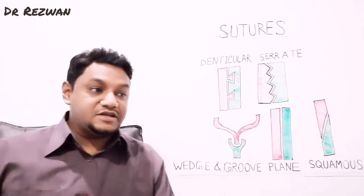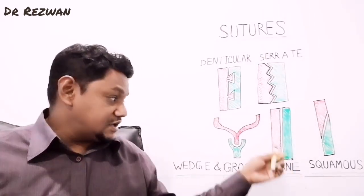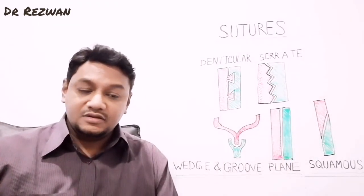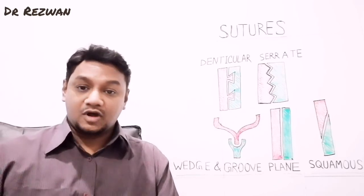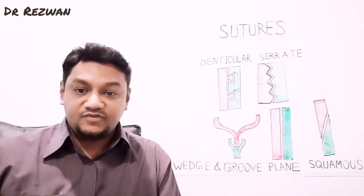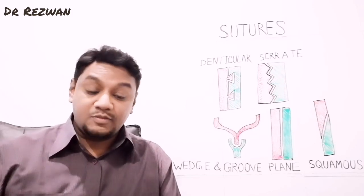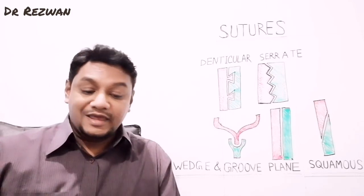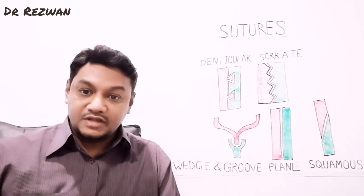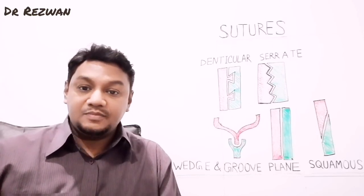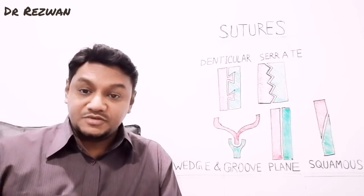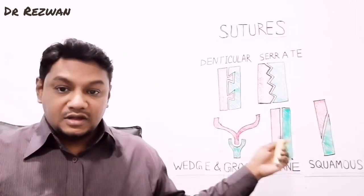The next type is the plane type of sutural joint. The articular surfaces of the corresponding bones are very plain, and they are simply adhered to each other by fibrous tissue. The plane type of sutural joint is commonly found in the palatine processes of the maxilla, where the palatine processes at their median plane are very plain and articulate with each other.